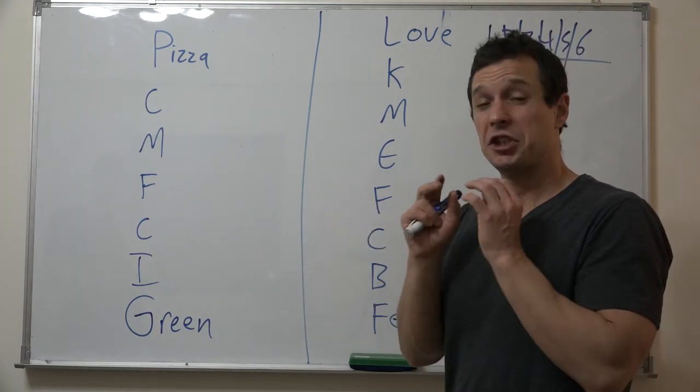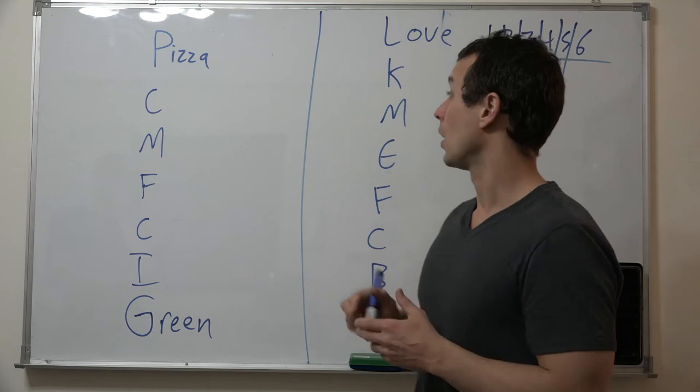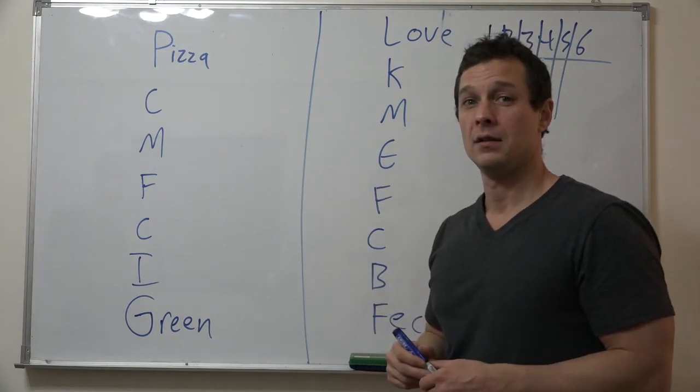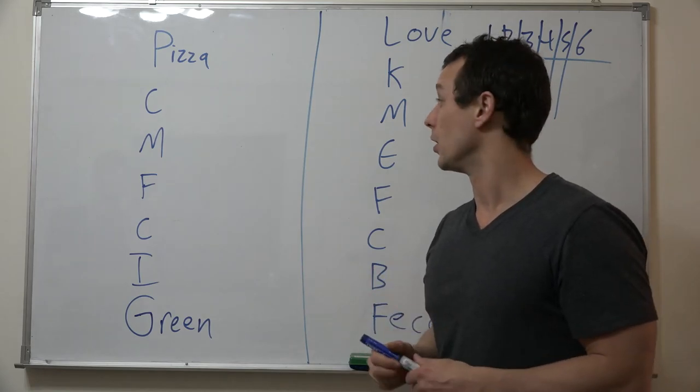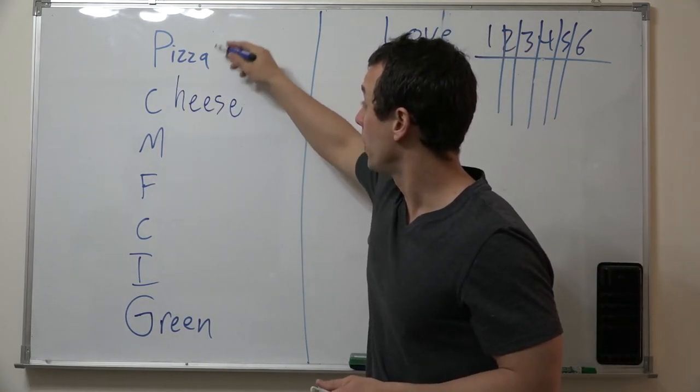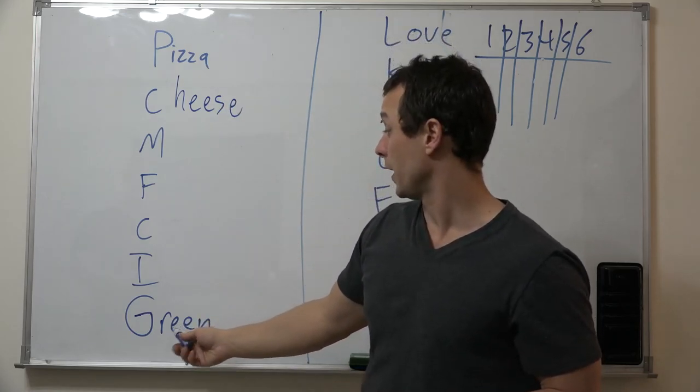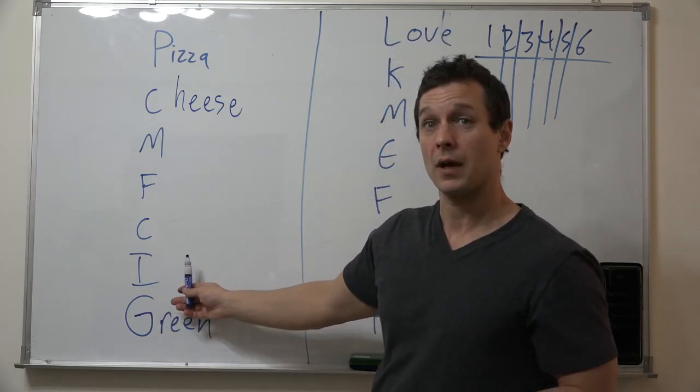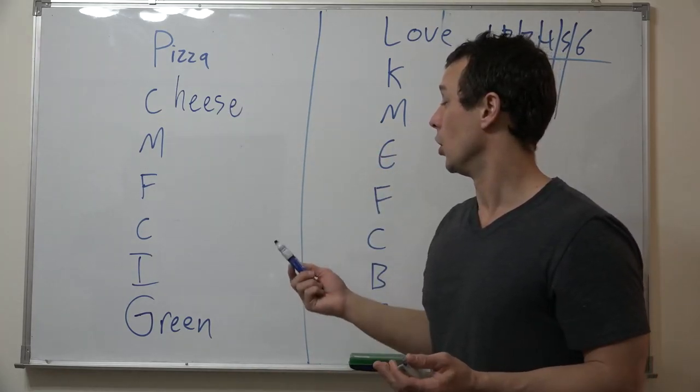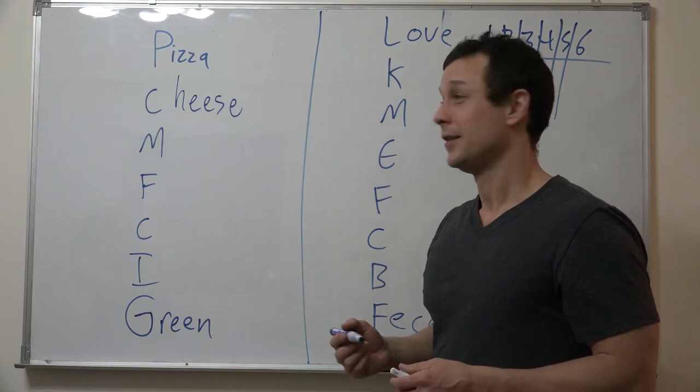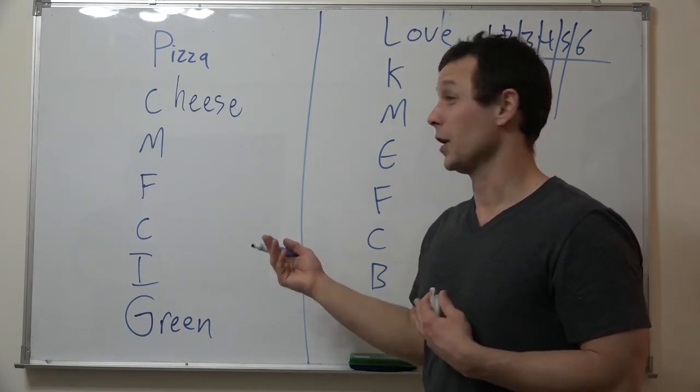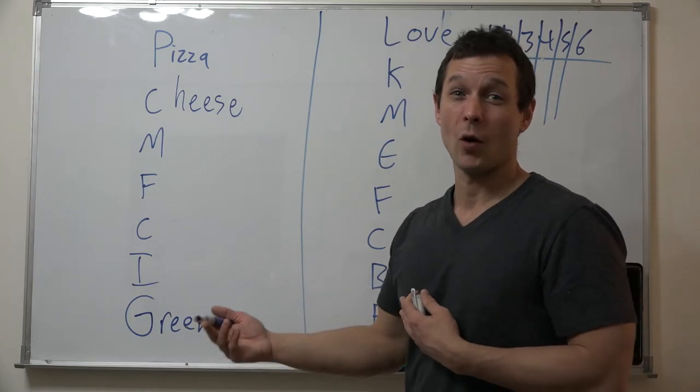So I'll just say, when you think of pizza, what do you think of that starts with C? Crust? Good. Cheese. Okay, cheese. And so they can go up or down. When you think of green, what do you think of that starts with I, or you can go down? Cheese, mozzarella.